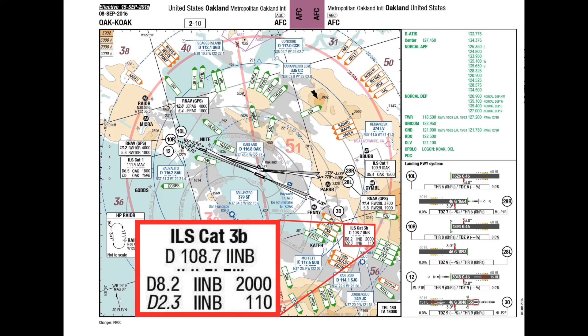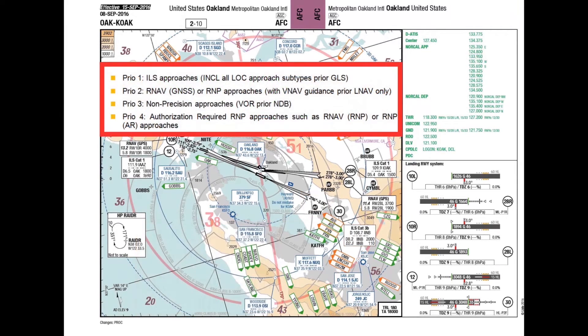Main approach procedures include frequency and facility identifier or performance-based navigation approach designator. The corresponding final approach procedure altitudes, courses, descent slopes, and approach procedures on final are provided as well. The best approach is ranked for the AFC as Priority 1: ILS approaches; Priority 2: RNAV or RNP approaches; Priority 3: non-precision approaches; and Priority 4: authorization required RNP approaches such as RNAV, RNP, or RNP-AR approaches.